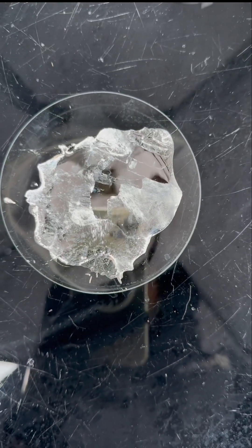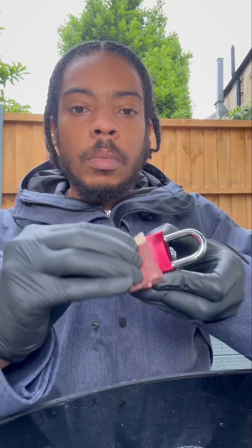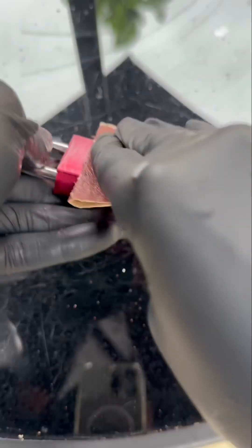Alright cool, so now we're going to get a little piece of sandpaper and sand off the red paint on the padlock so we can get to the pure aluminum underneath.